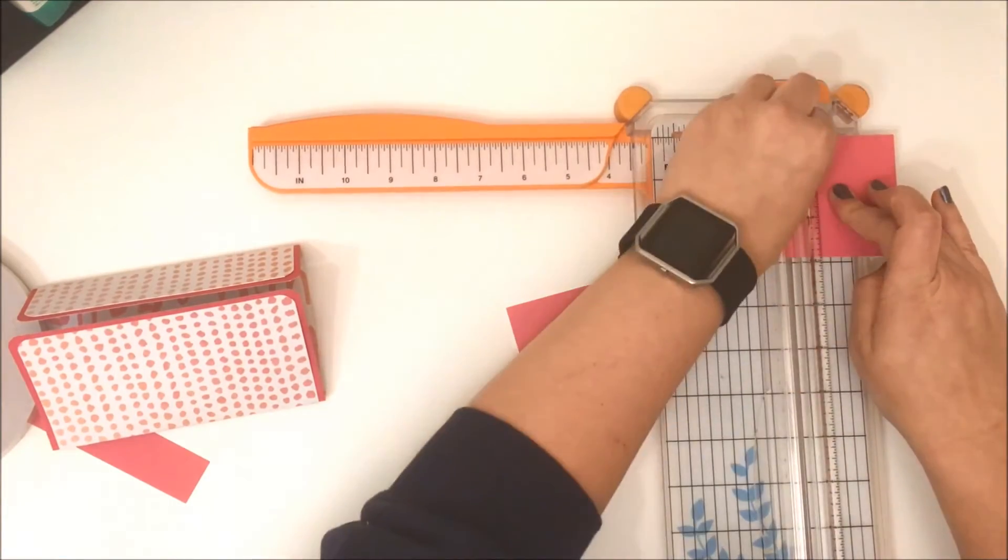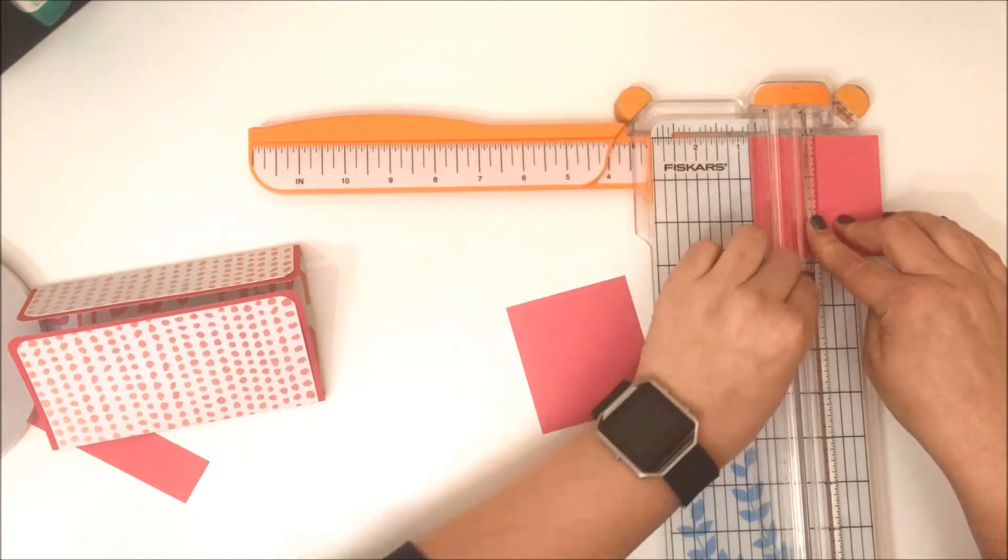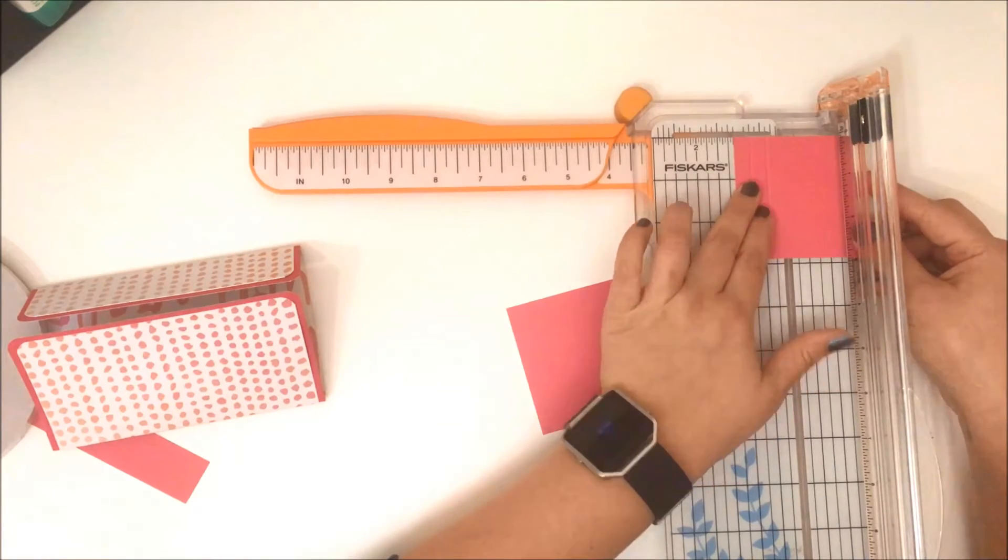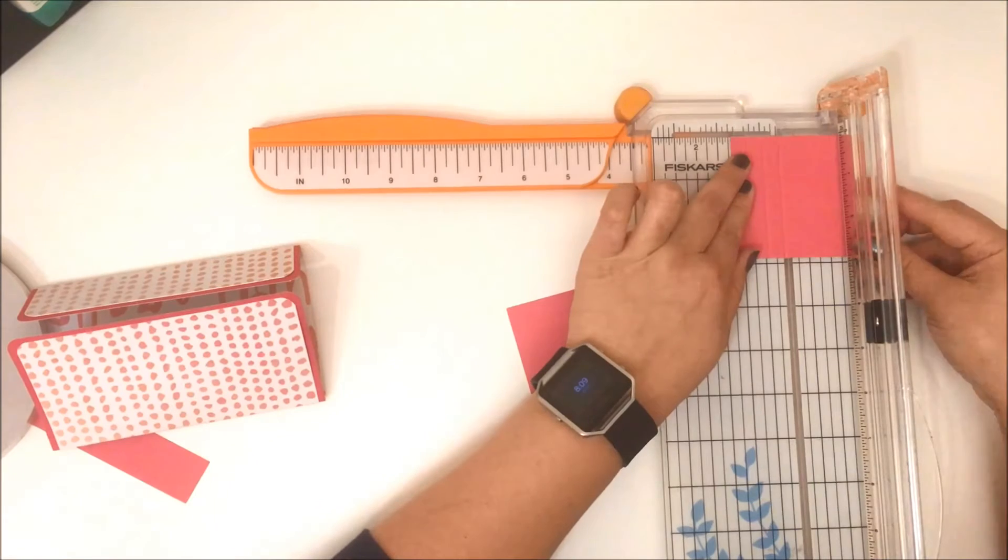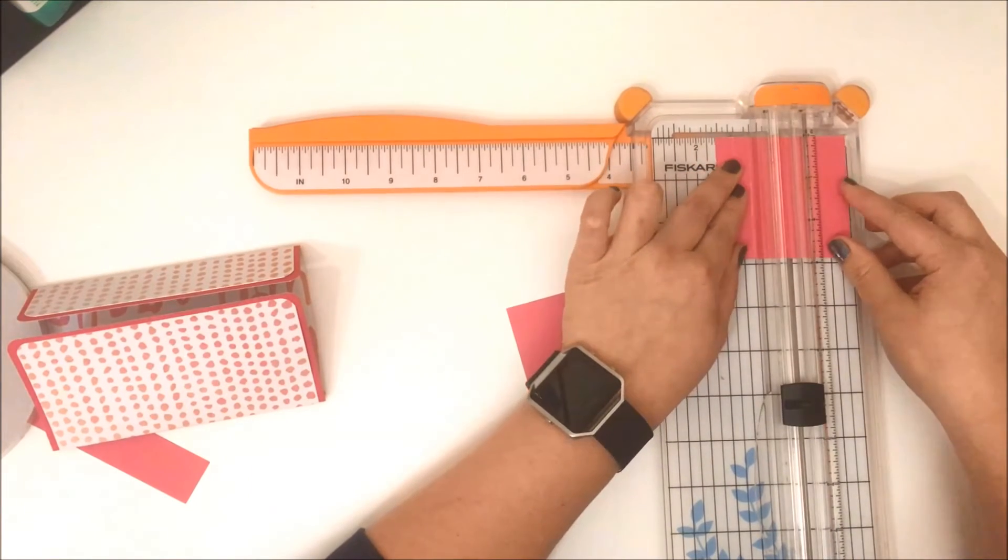Again, I'll list it down below so you've got all those details. Then you have to score every three-eighths of an inch. I know it sounds confusing, but it just makes the concertina. So three inches by two and seven-eighths, and then score every three-eighths of an inch on the three-inch lengthwise.